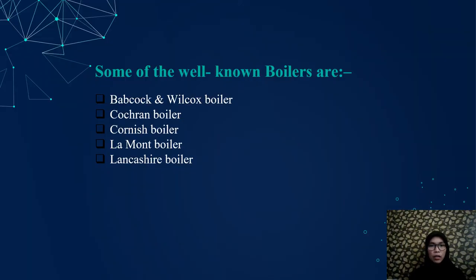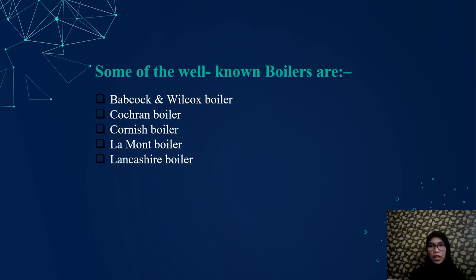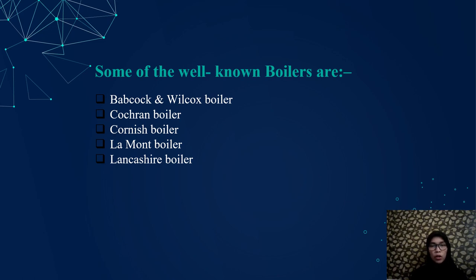Some well-known boilers include: first, Bakcourt and Billocourt boiler; second, Cochrane boiler, which is a vertical boiler with horizontal fire tubes; third, Cornish boiler, which is a large horizontal boiler with a single flue; fourth, Lamont boiler, a forced water circulation boiler often used as a heat recovery boiler, also used successfully in an experimental steam locomotive in East Germany in 1950; and fifth, Lancaster boiler, a development of the Cornish boiler with two flues.